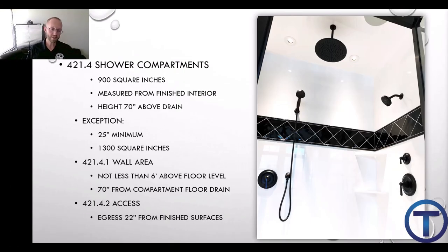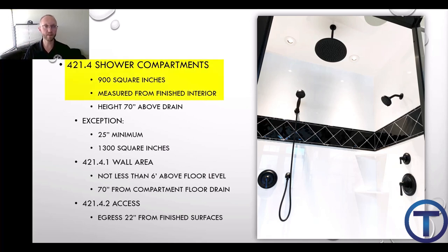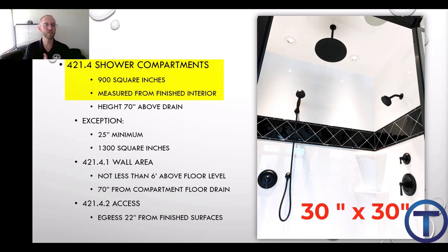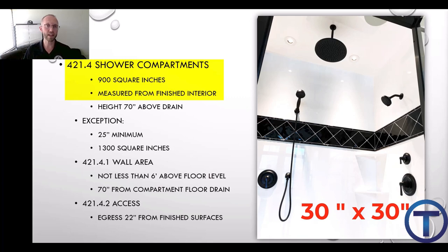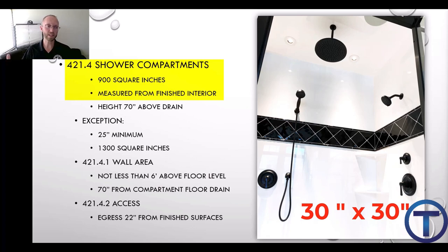4.21.4 gives dimensions for the shower compartment. Looking at the floor from a bird's eye view, the minimum is 900 square inches — take the square root of 900 and you get 30 by 30, which is the smallest shower compartment. That is measured from finished interior, meaning from the tile. So if you rough it in with a frame wall that's 30 by 30, by the time you get the board and tile in, it will be less than 30 and will not meet code. It has to be at least that dimension when finished.